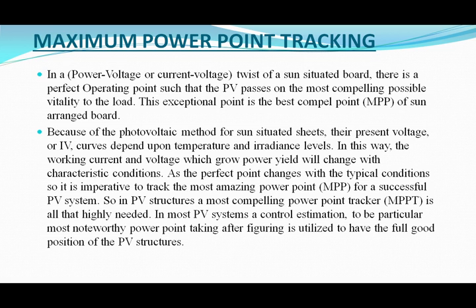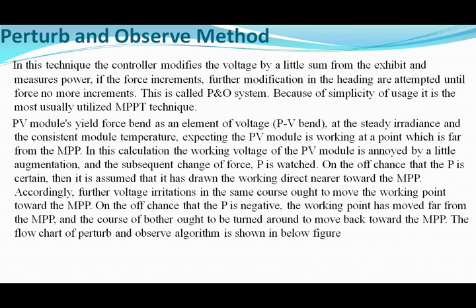In PV systems, a maximum power point tracker is highly needed. In most PV systems, a control algorithm — specifically maximum power point tracking — is utilized to take full advantage of the PV system. The Perturb and Observe (P&O) method: in this technique, the controller modifies the voltage by a small amount from the array and measures power. If the power increases, further modification in the same direction is attempted until power no longer increases. This is called the P&O method. Because of its simplicity, it is the most commonly used MPPT technique.